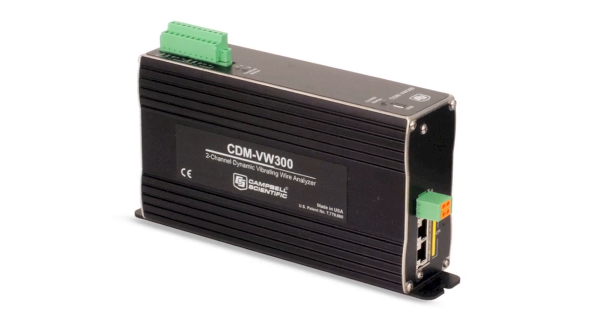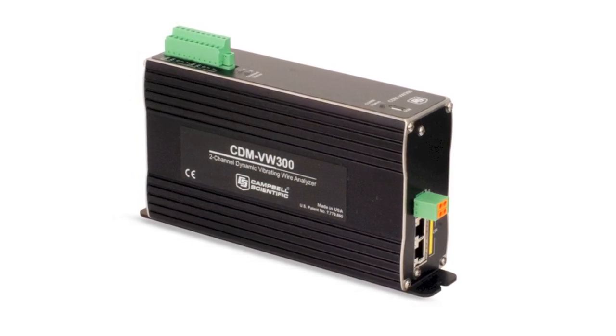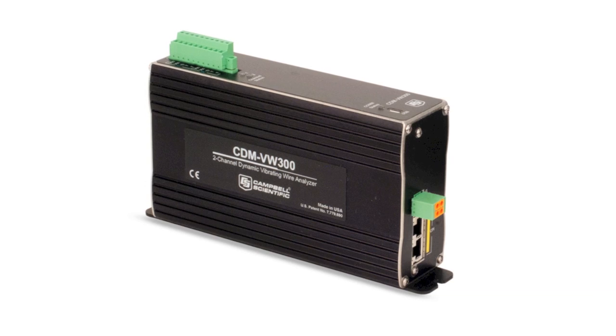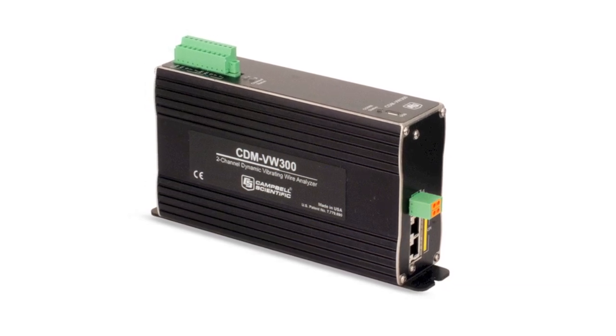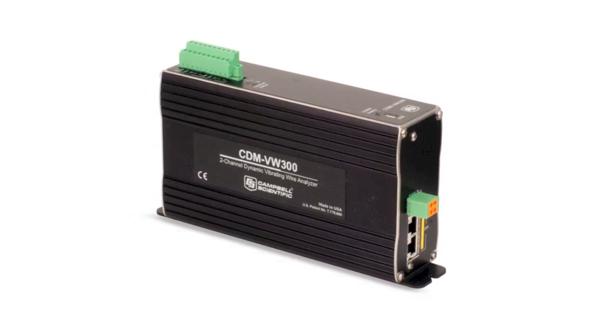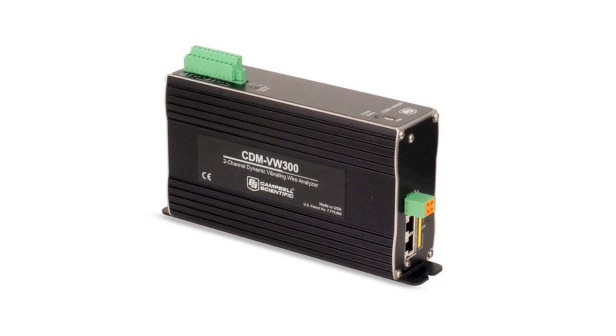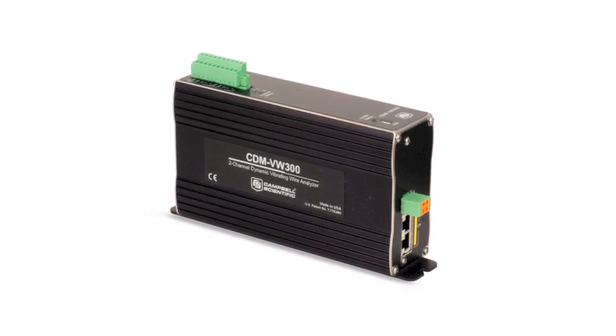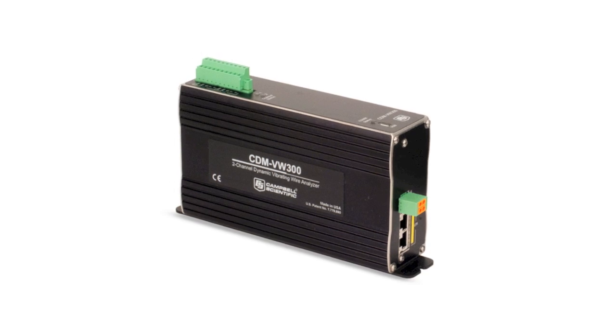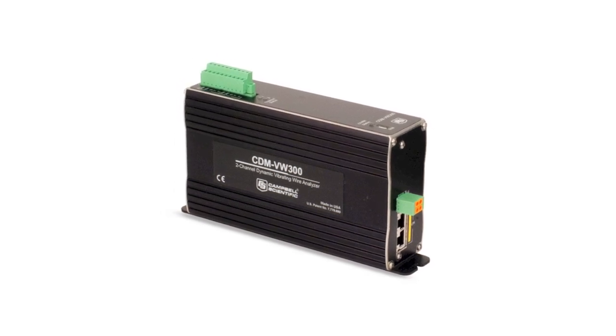The CDM VW300 builds on the spectral analysis algorithms developed for the AVW200. The difference between these two devices is the speed at which they can make their measurements. The CDM VW300 can make measurements ranging from 20 Hz to 333 Hz. These rates are well suited for measuring dynamic structural and geotechnical processes.